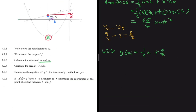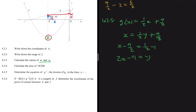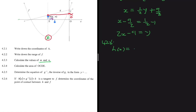To find the inverse, we swap x and y and solve for y. So x = ½y + 9/2. Taking 9/2 to the left: x - 9/2 = ½y. Dividing by ½ gives y = 2x - 9. That is the equation of the inverse of g.